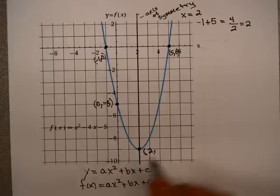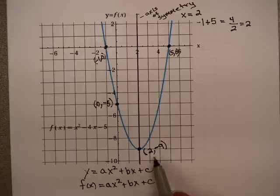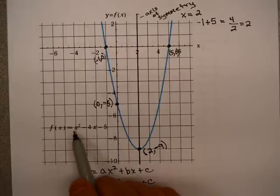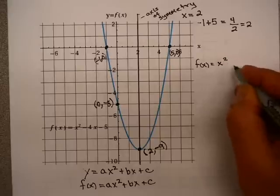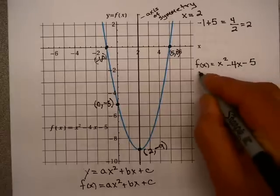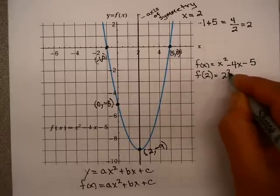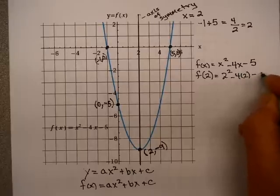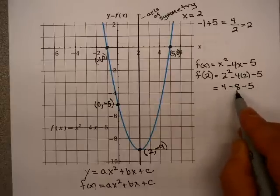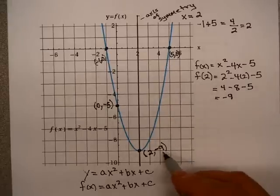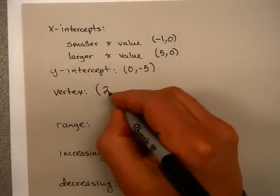The y-coordinate, in this case, I can pretty easily read it off as negative 9. But again, in some examples, it may not be so easy to read. So what you can do is you can replace 2 for x in the equation. And that will give you the y-coordinate. For example, our equation is f(x) equals x squared minus 4x minus 5. If I replace 2 for x, I get 2 squared minus 4 times 2 minus 5. 2 squared is 4. 4 times 2 is 8. So 4 minus 8 minus 5, if you do the math, that's minus 9. So in either case, you can get the coordinates of the vertex. So I will write that one down too, just like I would in WebAssign: (2, -9).